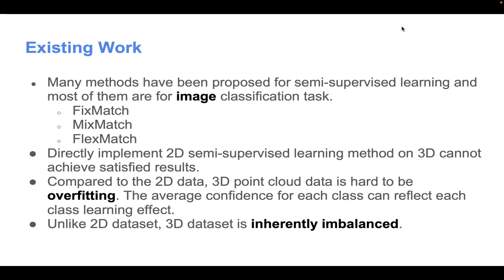However, directly implementing 2D semi-supervised learning methods on 3D cannot achieve satisfactory results. Besides, compared to 2D datasets, 3D point cloud data is harder to obtain. Finally, unlike 2D datasets, 3D datasets are inherently imbalanced.